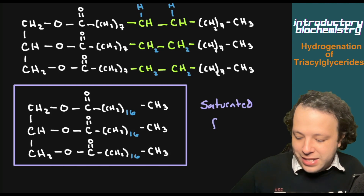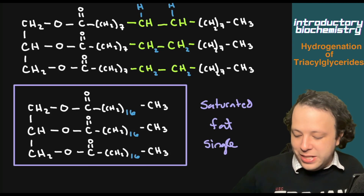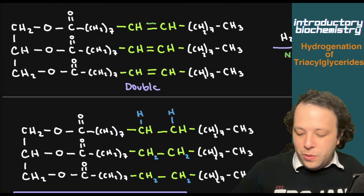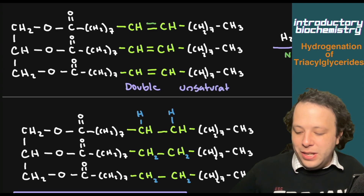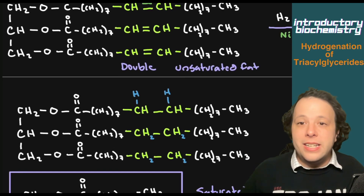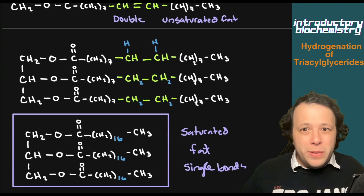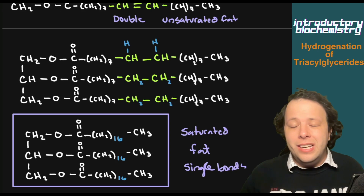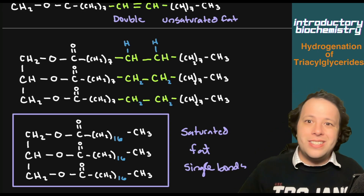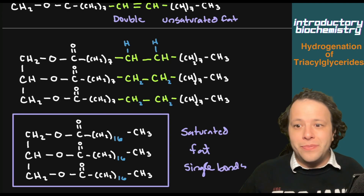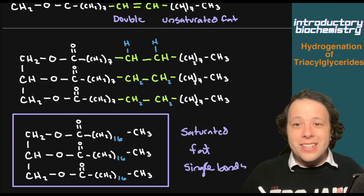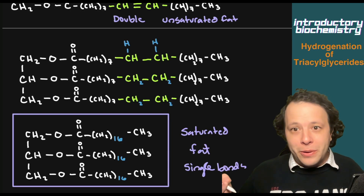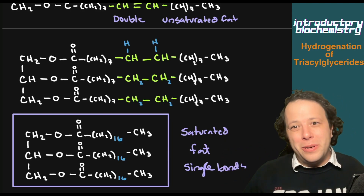So we now have a saturated fat — all single bonds — versus when we started with double bonds, which was an unsaturated fat. That's the whole idea: you're opening up those double bonds. This can be done not just with hydrogenation but also with bromination, hydrohalogenation, and any of the other addition reactions. If you need a refresher on addition reactions, go refer back to my video on that. I hope this video helped — short, sweet, and to the point. If you want to see future videos, please like, subscribe, and comment to let me know what you think. I'll see you all later — have a wonderful day!